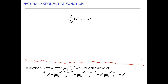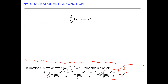The derivative of the natural exponential function e^x is e^x itself. Using the limit definition: (e^(x+h) minus e^x) over h. Since e^(x+h) equals e^x · e^h, we factor out e^x. The remaining limit — (e^h minus 1)/h as h goes to zero — equals 1, as proved in section 2.5. So e^x times 1 is e^x. Know this: derivative of e^x is e^x.